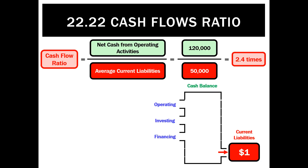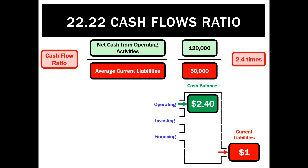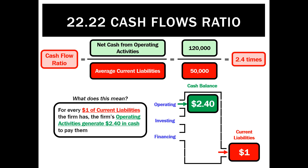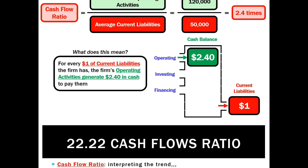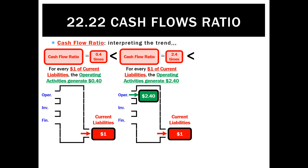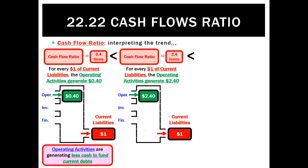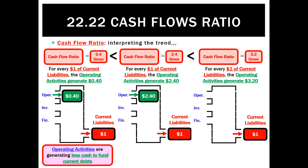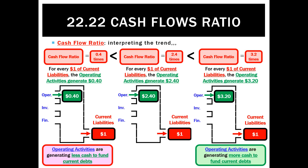So what does that mean? It means that for every dollar of current liabilities that have to be paid, my operating section is generating $2.40 in net cash to pay them, which is excellent — well and truly enough cash coming in from the operating section. Interpreting the trend: if it went from $2.40 down to $0.40, that's a bad trend — our operating activities are generating less cash to fund our current debts. If that ratio went up to 3.2, that's a very good trend, meaning our operating section is generating $3.20 in net cash to pay that $1 of current liabilities — we have more cash from operating activities to fund our current debts.